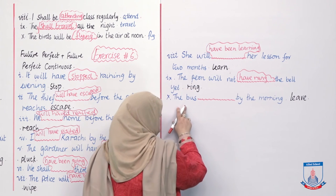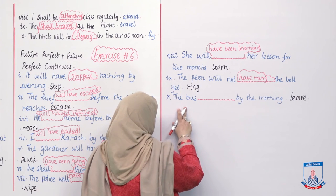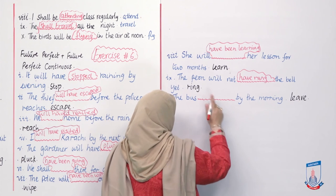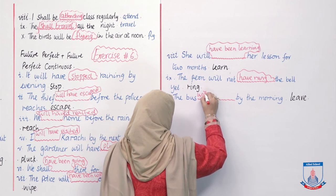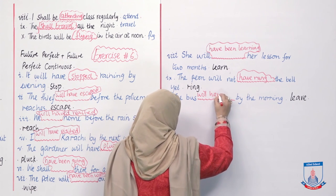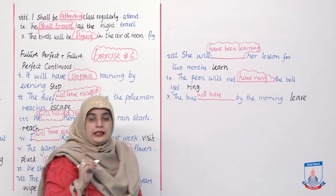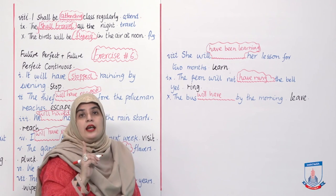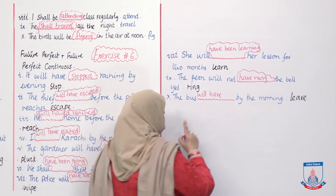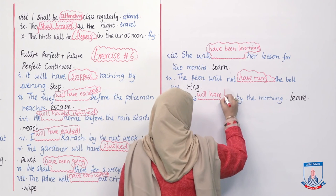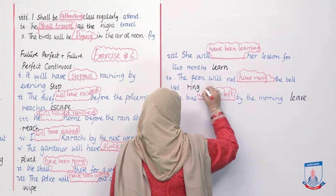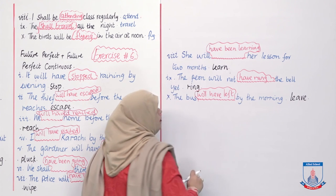And the last sentence of the day: 'The bus ___ by the morning.' Leave, left, left — irregular verb. Answer: 'The bus will have left by the morning.'